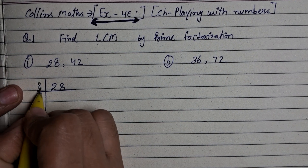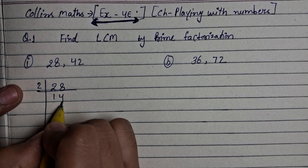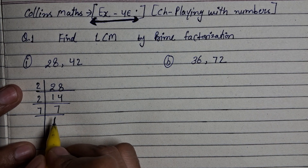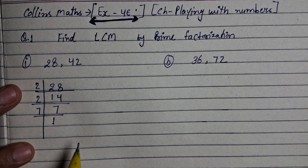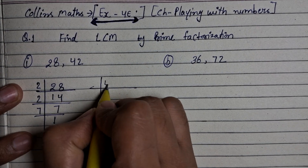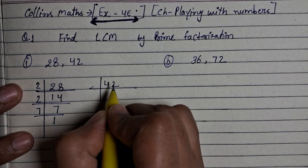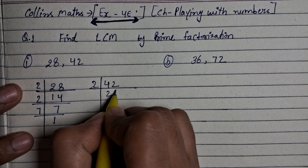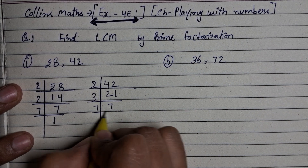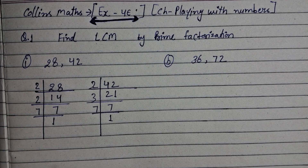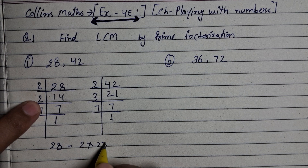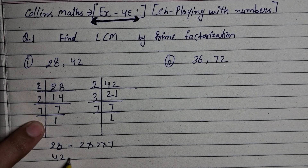We divide by 2. So 2 times 14 is 28. Then 2 times 7 is 14. And 7 times 1 is 7. Prime factorization means we divide by prime numbers. Now 42: 2 is divisible, so 2 times 21 is 42, then 3 times 7 is 21, and 7 times 1 is 7.